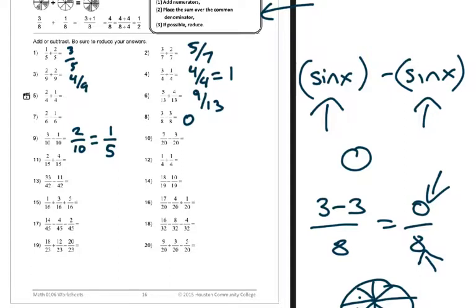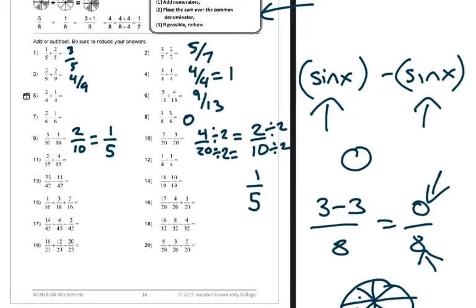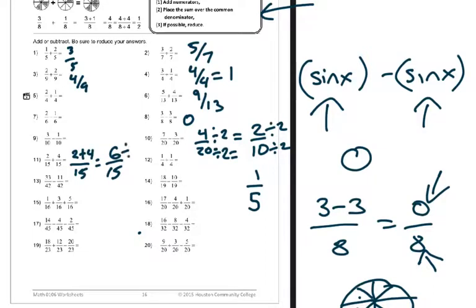Seven-twentieths minus three-twentieths: seven minus three is four, so four-twentieths. Both are divisible by two, giving two-tenths, and dividing again by two gives one-fifth. You could have divided through by four directly - I just wanted to show another way. Two-fifteenths plus four-fifteenths is two plus four over fifteen, which is six over fifteen. Since these are both divisible by three, that gives two over five.